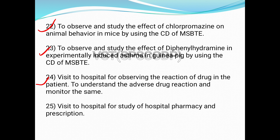The next experiment is a visit to a hospital to observe drug reactions in patients, understand adverse drug reactions, and monitor them. We have to visit the hospital, understand the types of adverse drug reactions, monitor them, and write a report on the visit. You also have to observe the various departments of the hospital, study hospital pharmacy and prescriptions, and write a report.